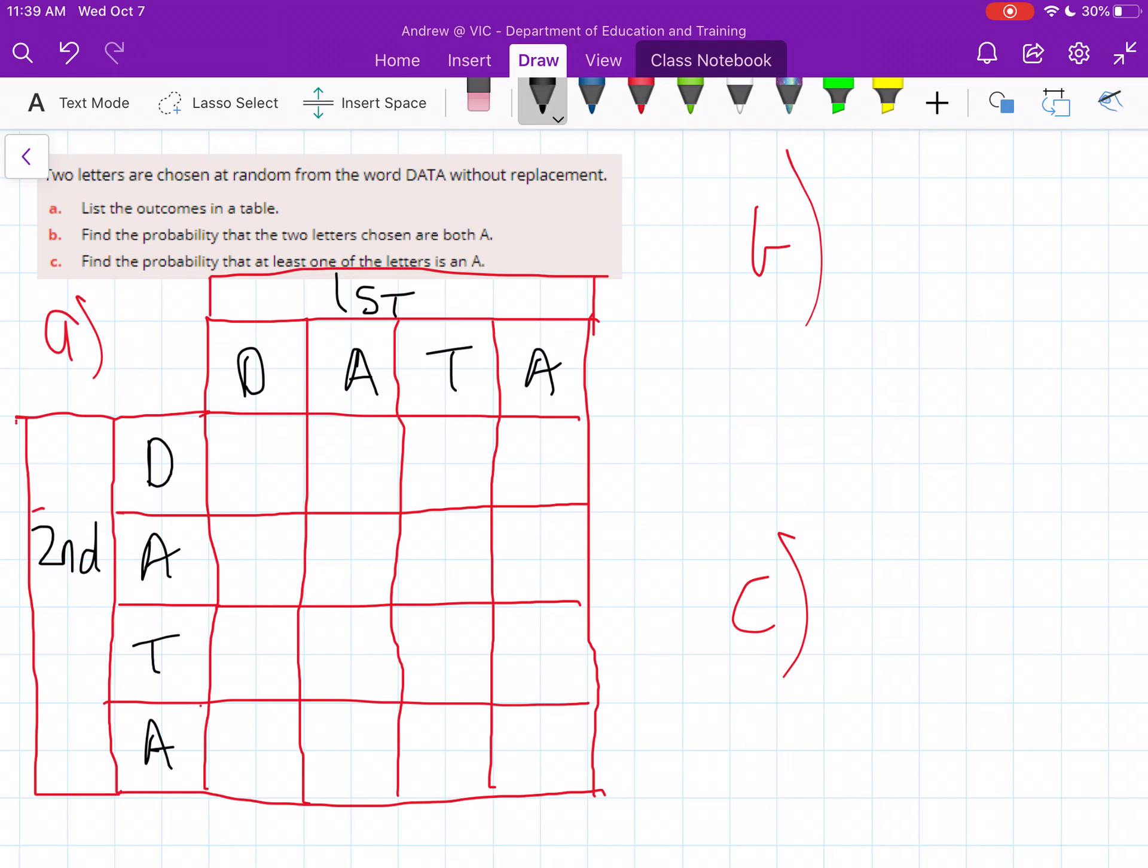With this example, we're looking at the question: two letters are chosen at random from the word DATA without replacement. We've got two choices and you can see I've set up a table for part A, list the outcomes in a table. So I've set this up already, hopefully you'll use a ruler. Use a ruler to draw up your table and you've got all the different options here, DATA and DATA for the first and the second.